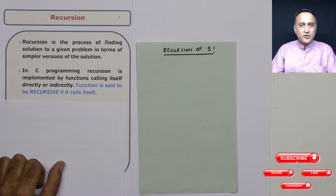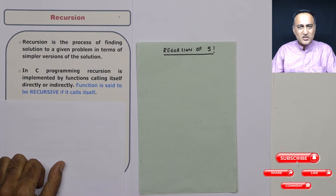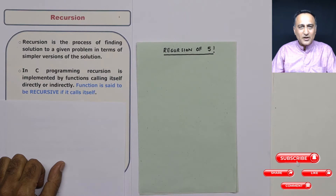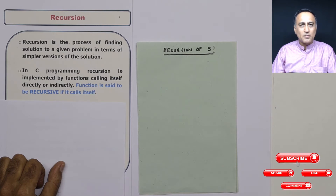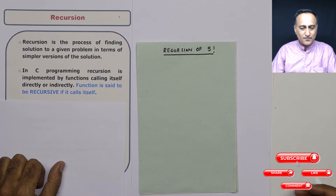Recursion is not unique to C. Recursion is a process of solving a problem by breaking it down into simpler problems and then combining the solutions obtained to those simpler problems to get the solution of the complete problem.